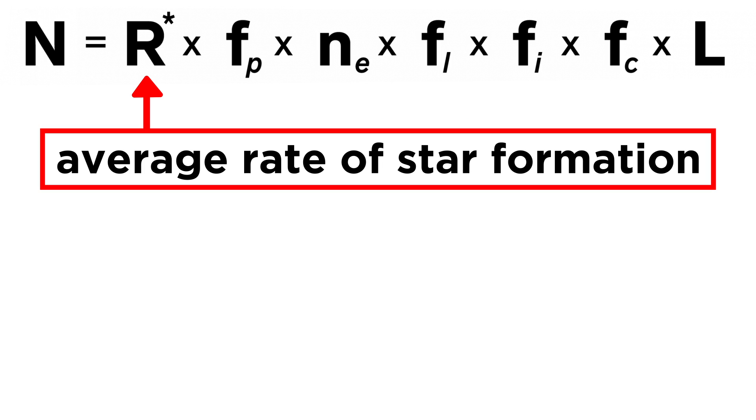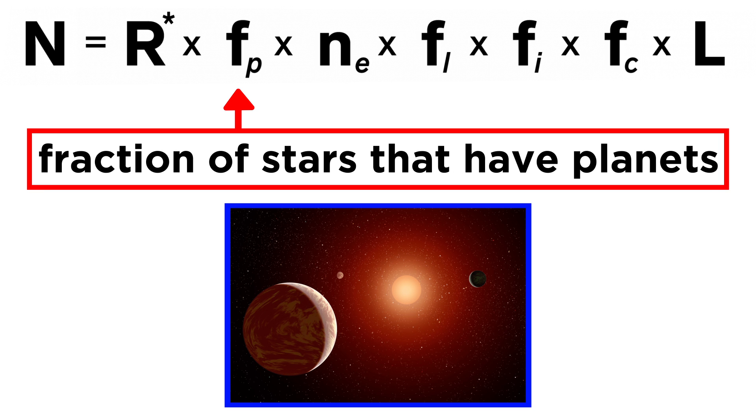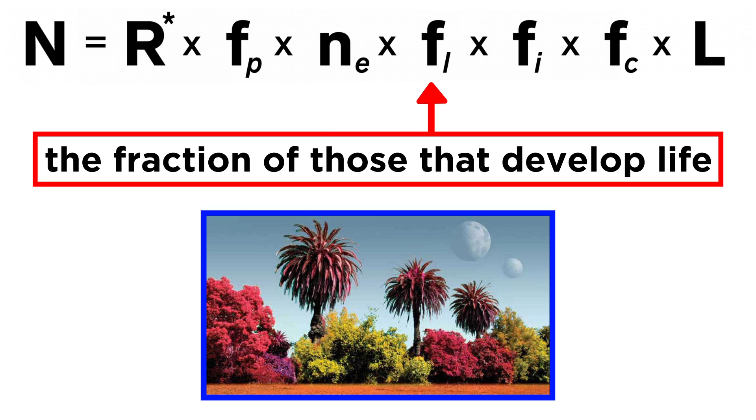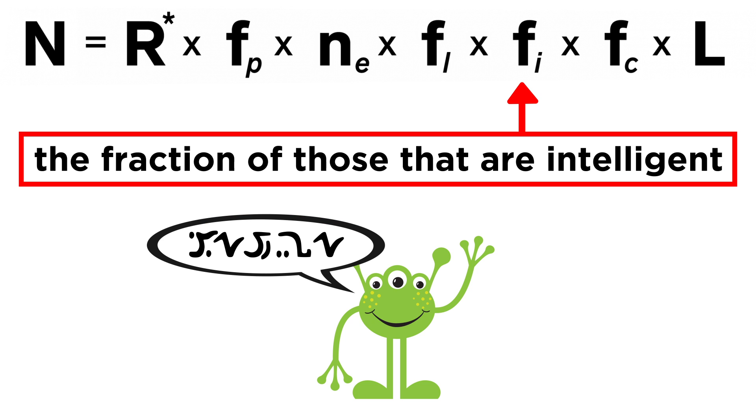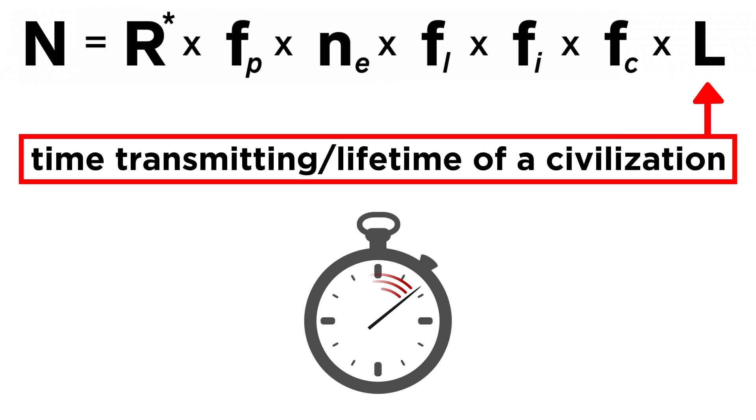So what are these variables? First, we have the average rate of star formation. It's difficult to conceive of life without a parent star, so that's an important variable. Next is the fraction of stars that have planets. Then, of those stars with planets, the fraction of them that can potentially support life. Of those, the fraction that actually develop life. Of those, the fraction that develop intelligent life. Of those, the fraction that develop sophisticated technology with which to potentially communicate with us, and are perhaps actively sending signals through the galaxy. And finally, the length of time that such civilizations send such signals, which can be interpreted as the lifetime of the civilization.